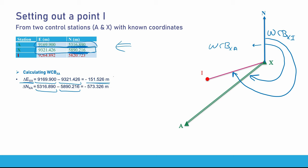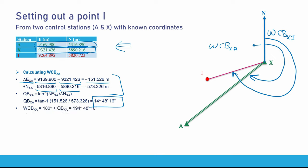After calculating the change in easting and change in northing, compute the quadrant bearing of XA using the inverse tangent of delta E divided by delta N. The quadrant bearing I calculated for this case is 14 degrees 48 minutes and 16 seconds. Then the whole circle bearing of XA is 180 plus the quadrant bearing of XA, giving 194 degrees 48 minutes and 16 seconds.